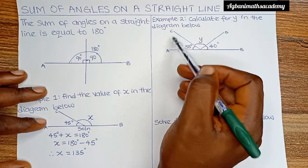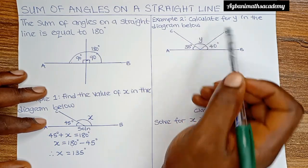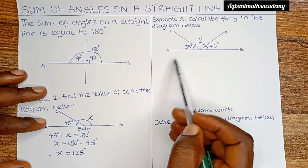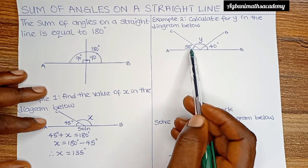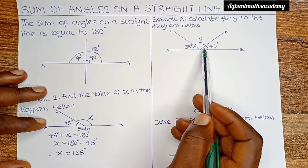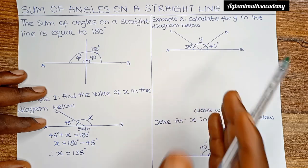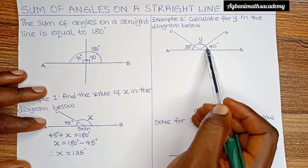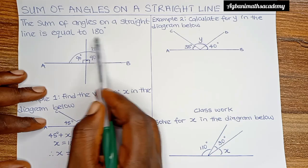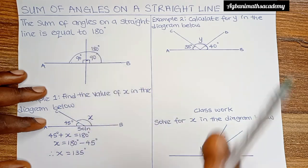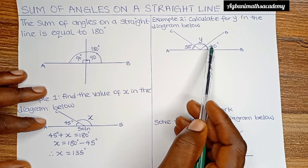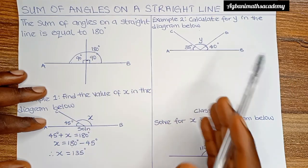For the second example, we are told to calculate for y in the diagram below. In this diagram we have three angles: the first is 35 degrees, the second is y, and the third is 40 degrees. Remember, the sum of angles on a straight line is equal to 180 degrees, so 35 degrees plus y plus 40 degrees is equal to 180 degrees.